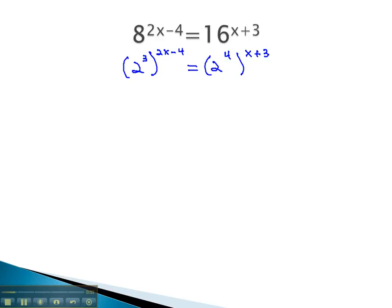We next need to combine our exponents together by multiplying them. As we do, it's important to remember that we don't just multiply the 3 by the 2x, but also by the negative 4. This gives us 2 to the 6x minus 12. Distributing on the second side will give us 2 to the 4x plus 12.